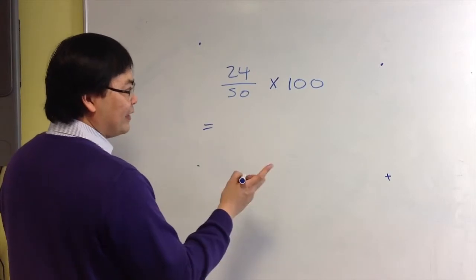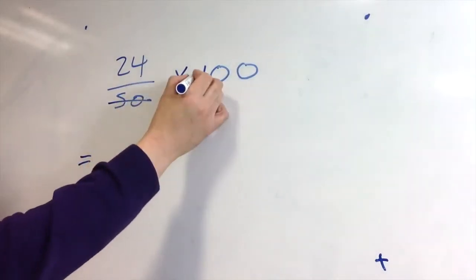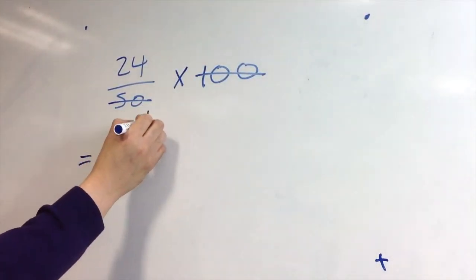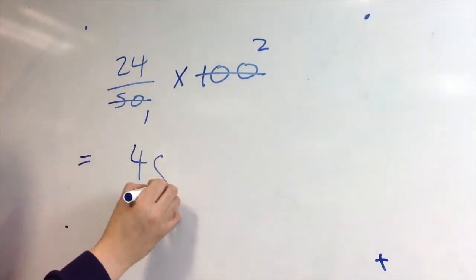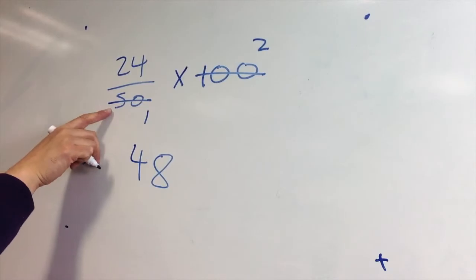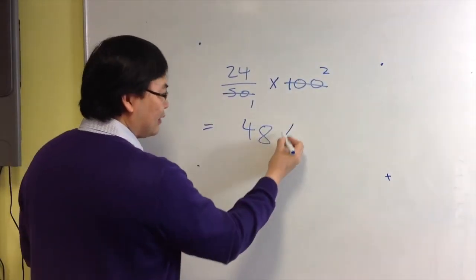When we simplify this, 50 goes into both numbers here once and here twice, and we're left with 24 times 2, which is 48. And so we've shown 24 as a percentage of 50 is 48 percent.